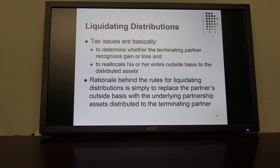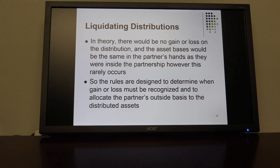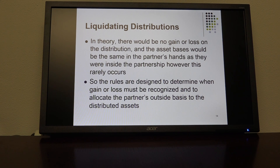You're simply placing an asset that was in the hands of the partnership back into a partner's hands, so they try to make that fairly seamless. In theory, there would be no gain or loss on the distribution, and that's true in most cases but not all. The asset basis would be the same in the partner's hands as they were inside the partnership. However, this rarely occurs because outside basis and inside basis don't always equal. The rules are designed to determine when gain or loss must be recognized and to allocate the partner's outside basis to the distributed assets.